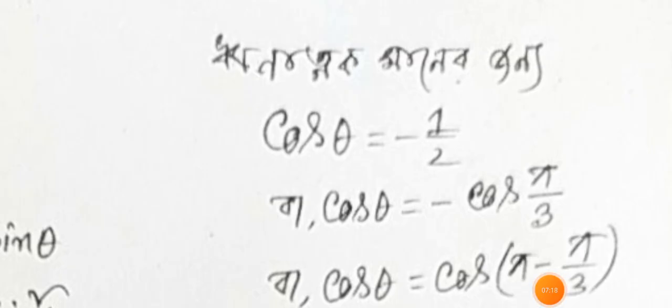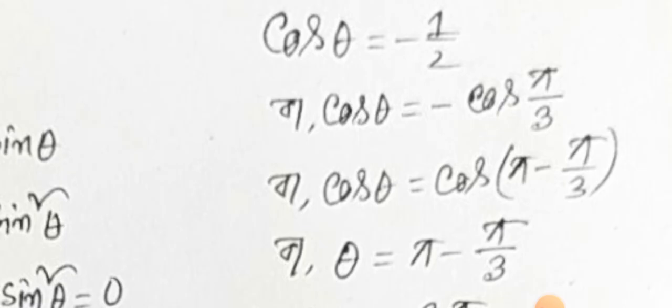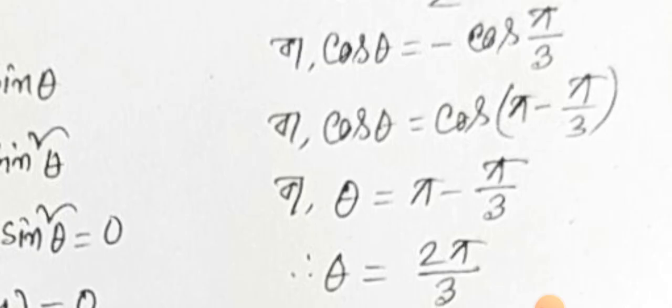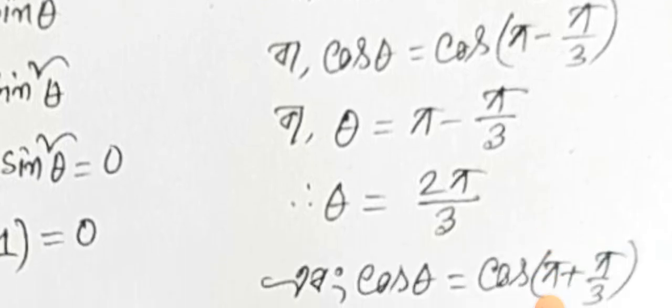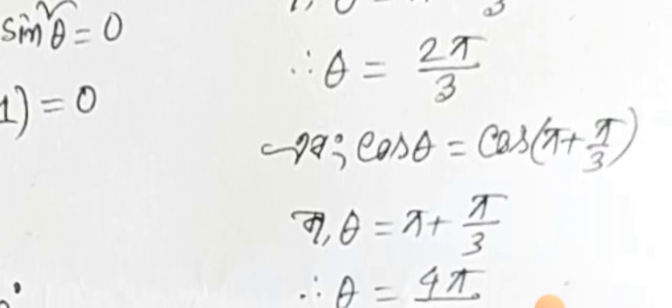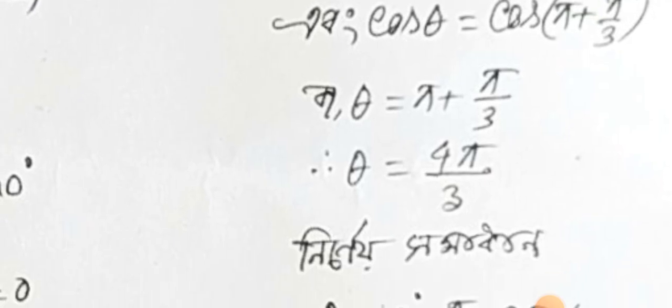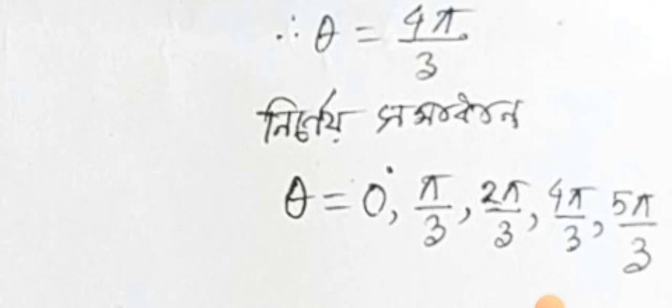So the half cos pi by 3, cos pi by 3, cos pi by 3, 2 pi. And cos pi by 3, pi by 3, 2 pi by 3, pi by 3.